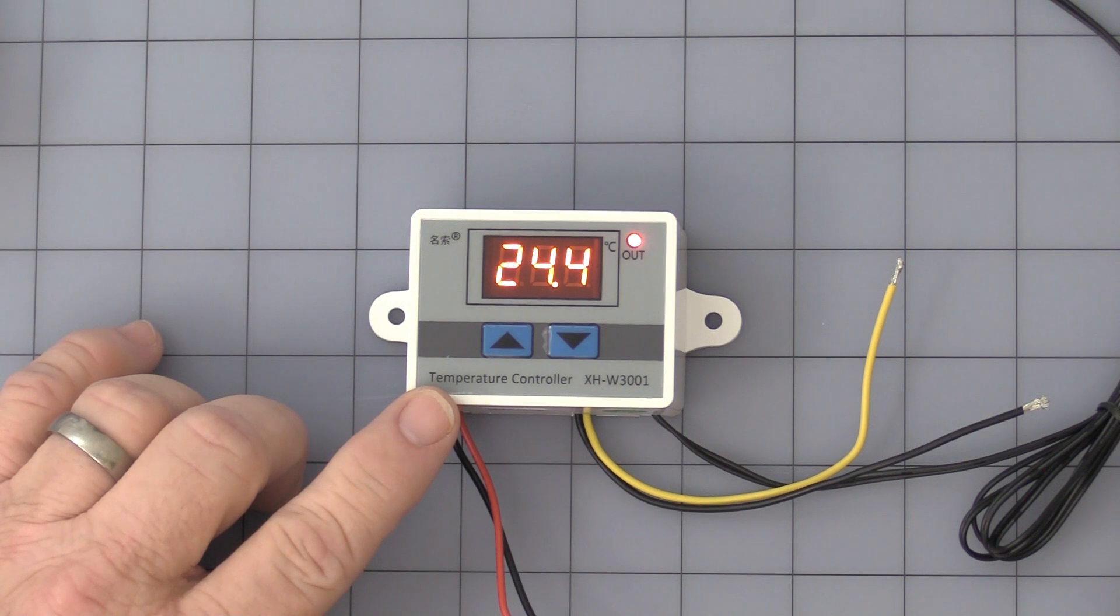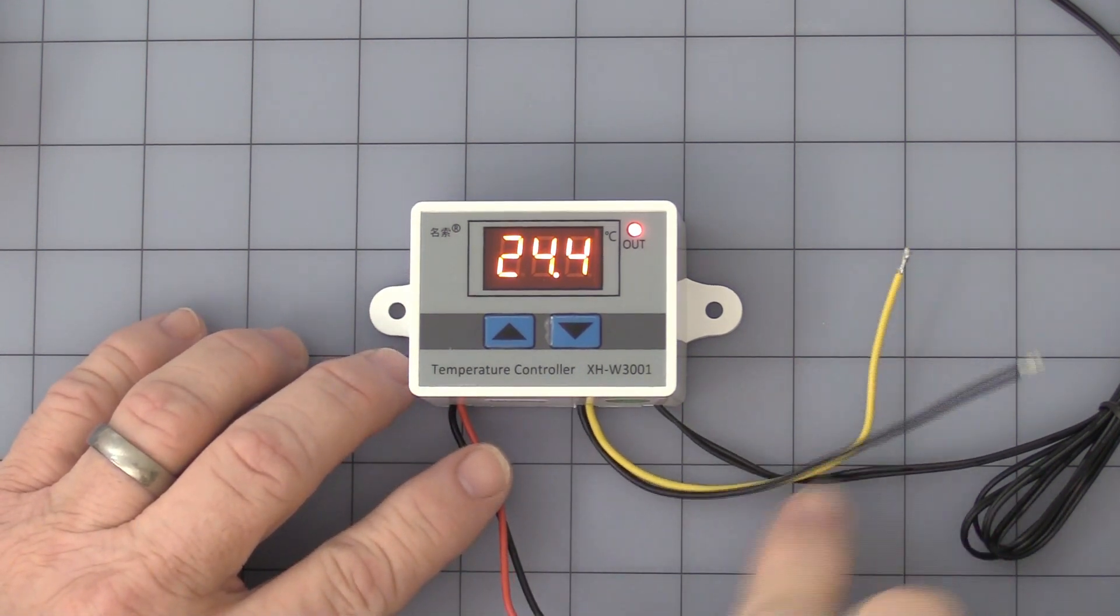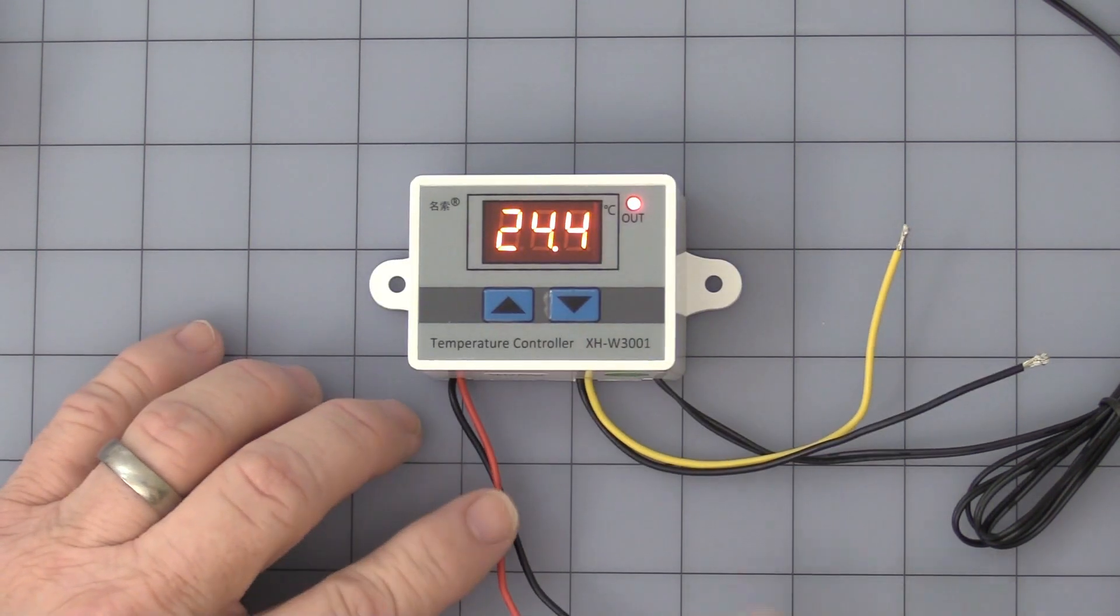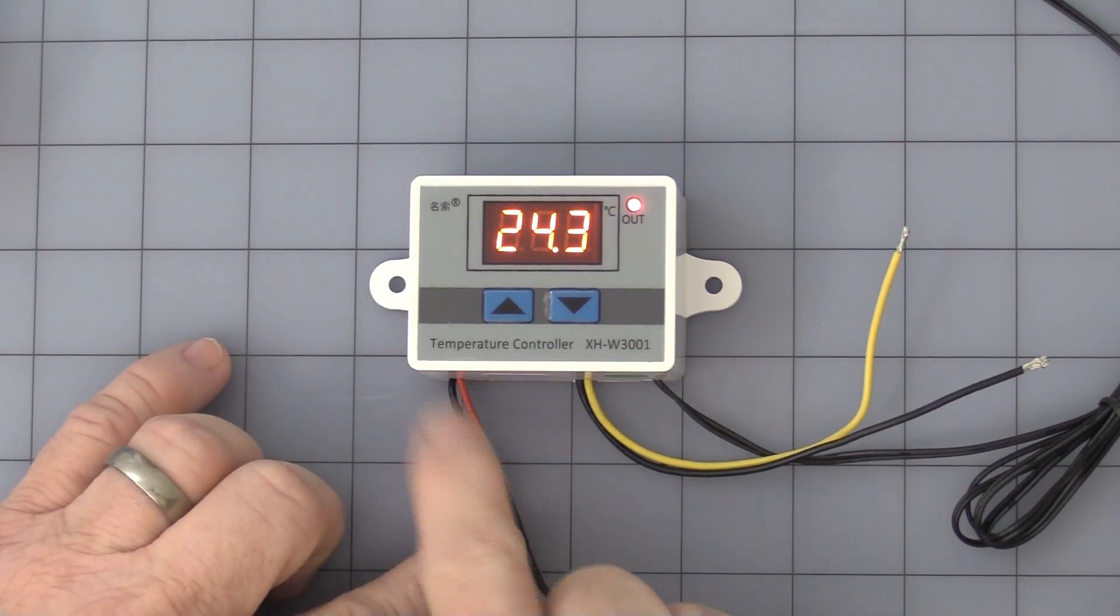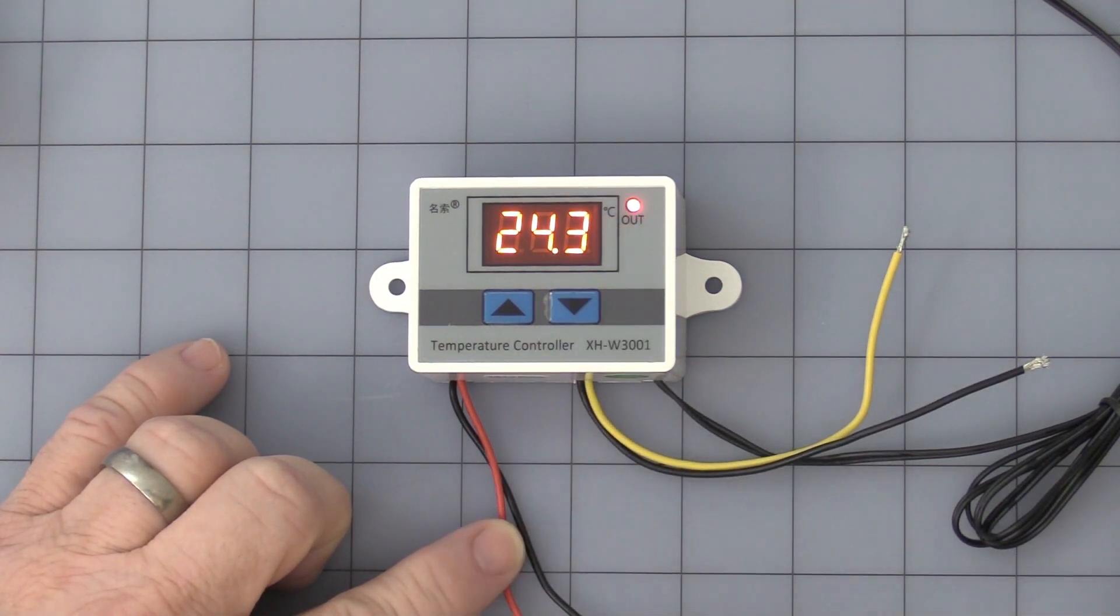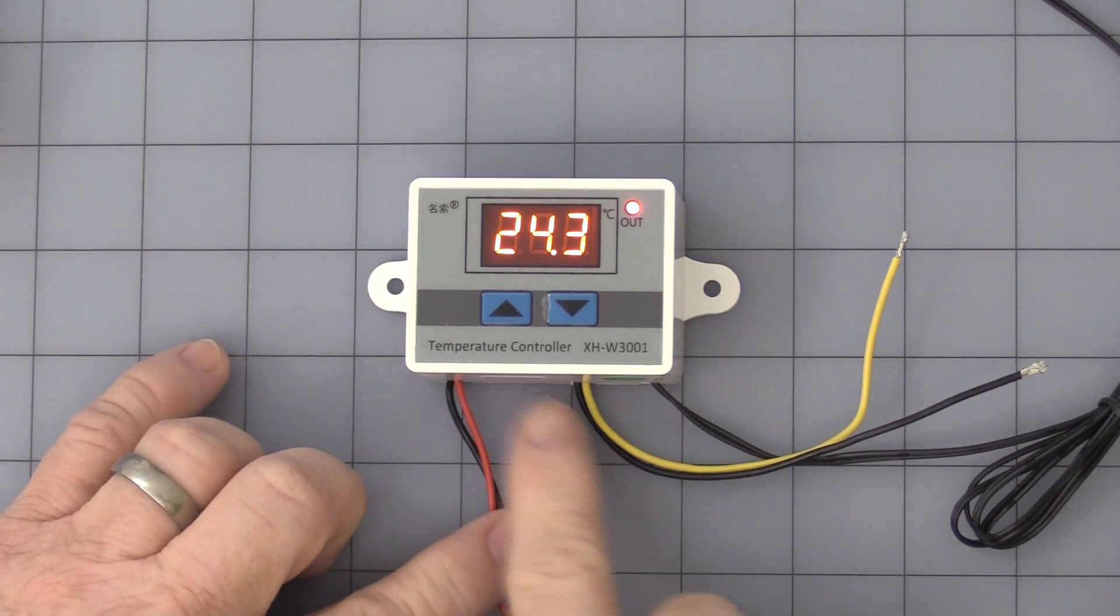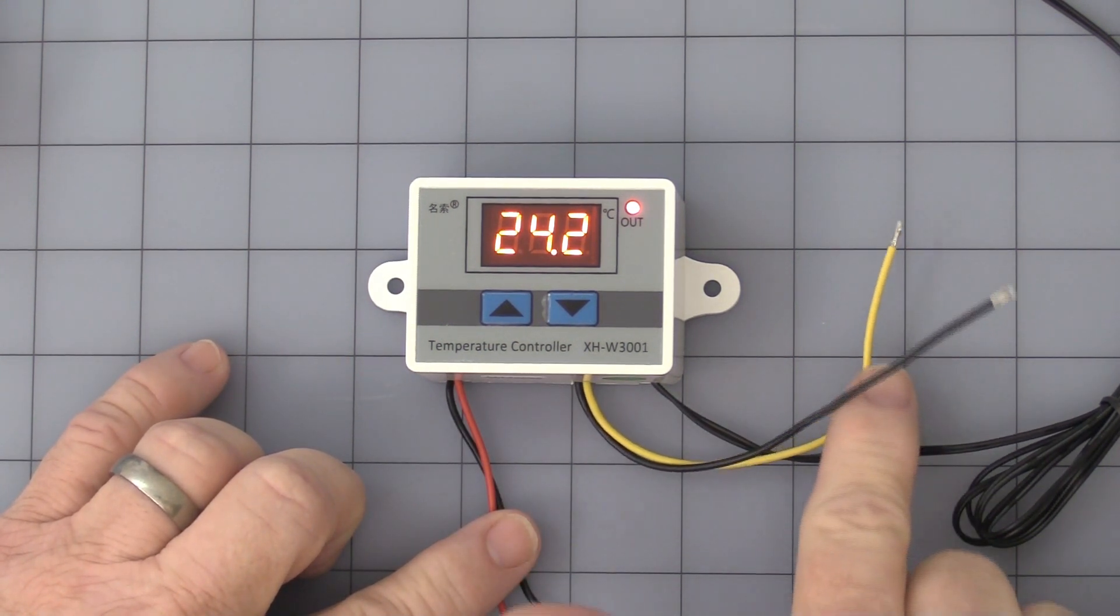What's also different about this from the other thermostats we sell is the output. The output has a relay in it, but it actually switches the input power to it on or off. So right now when you see this little light on, that's the relay indicator. I'm powering this off my benchtop power supply, about 11 volts, so you have 11 volts of DC coming out of here right now.